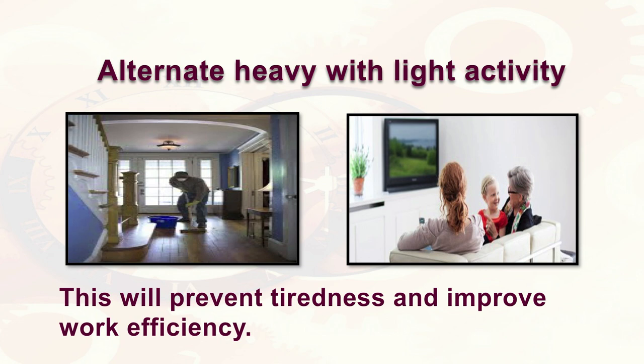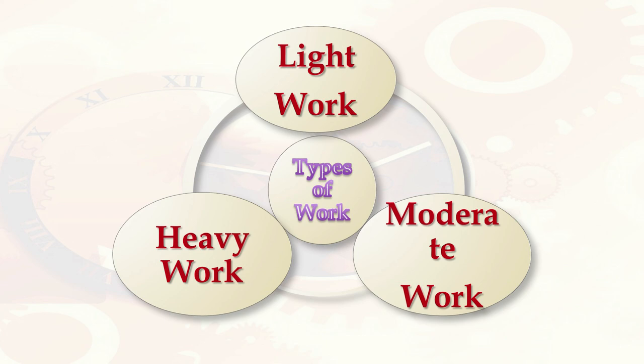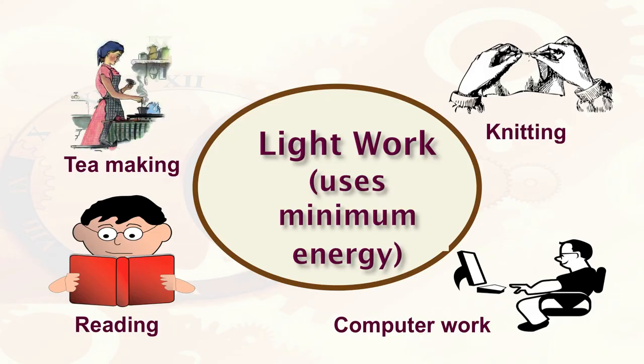Alternate heavy work activities with light or moderate work activities. This will prevent tiredness and improve work efficiency. In this picture you can see a person doing floor cleaning, which is a kind of heavy work, particularly when done by sitting, and subsequently you can watch or relax yourself. We divide the type of work into three categories: light work, moderate work, or heavy work. You can plan accordingly with whatever combination of activities you need to complete.